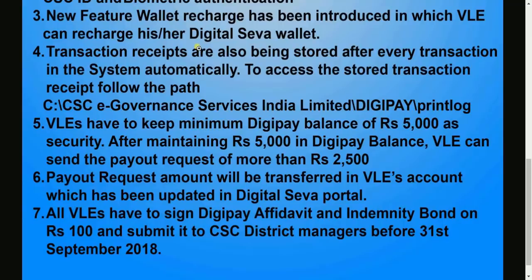To access the automatically stored transaction receipt, you must go to your local disk C, then go to the folder CSC eGovernance Services India Limited, then go to DigiPay, and then to the Print Log folder. In the Print Log folder, you can see all your transaction receipts for your DigiPay transactions.